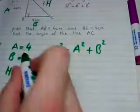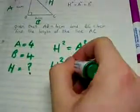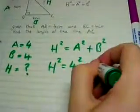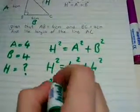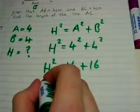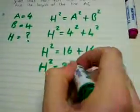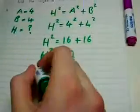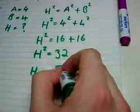Then all you have to do is sub in A and B. This would give you H squared equals 16 plus 16. Then H squared would equal 32. Then H equals the square root of 32.